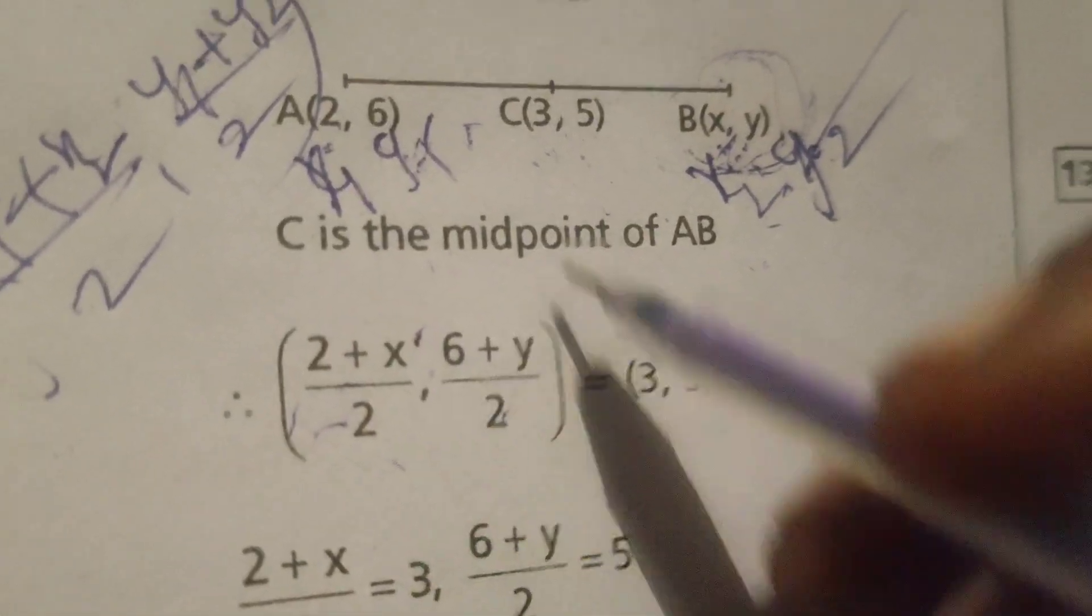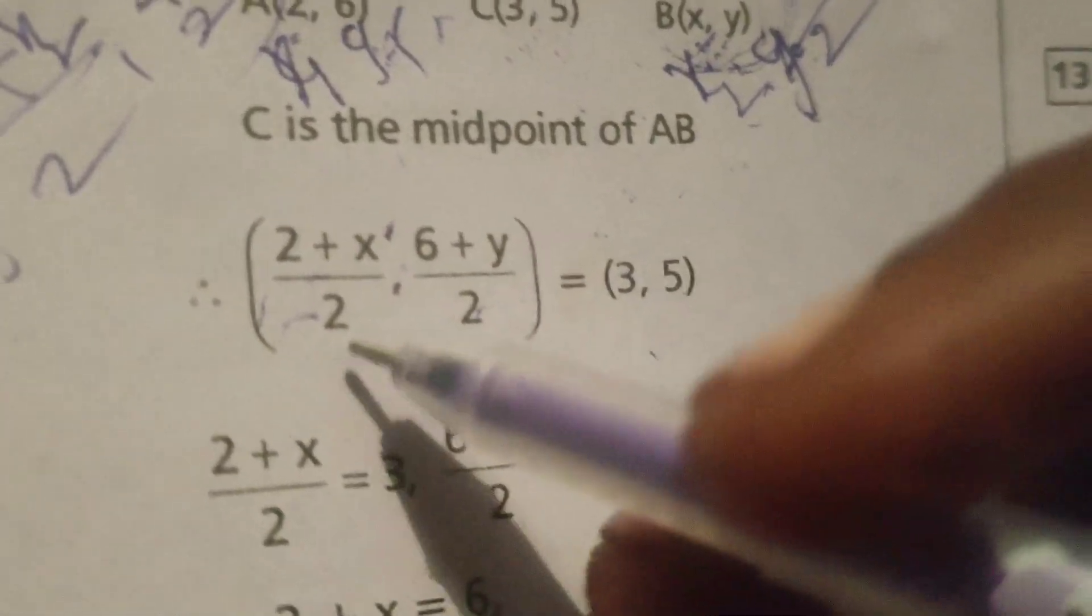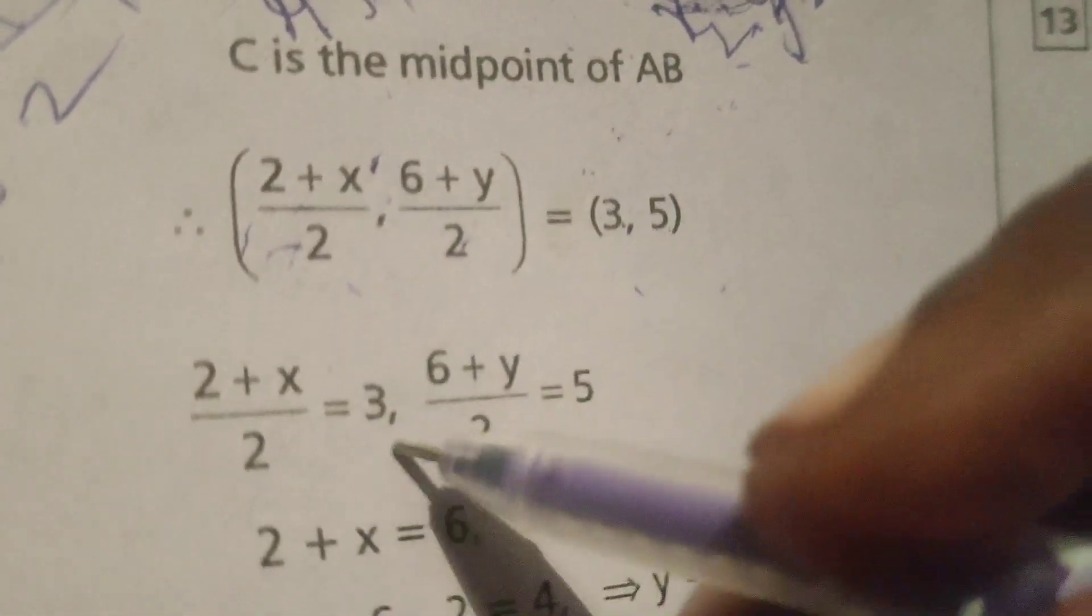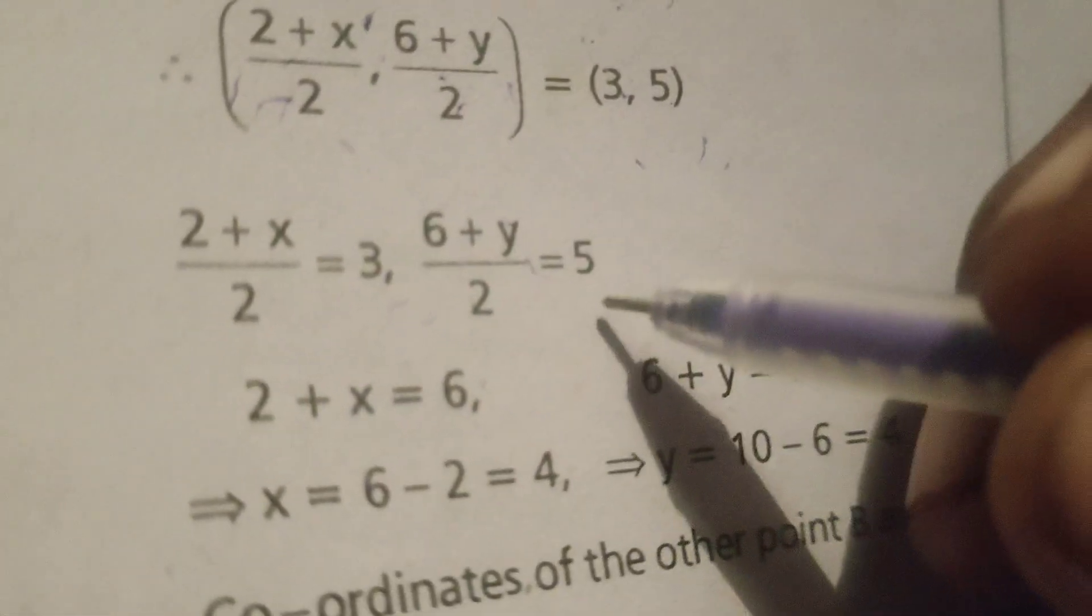Therefore, equating to (3,5): (2 + x)/2 = 3, and (6 + y)/2 = 5.